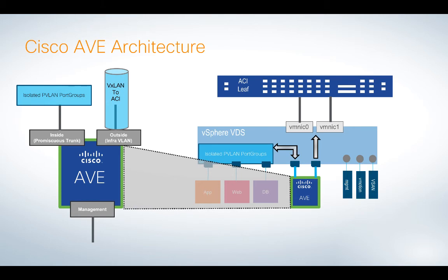If traffic needs to connect outside of the AVE — say you want to talk to the internet or elsewhere in the ACI fabric — we use the outside interface. In my lab, I deploy it using VXLAN encapsulation. There's going to be a VTEP and a VXLAN tunnel that leads to the rest of my ACI fabric. That's beneficial because I don't have to trunk every single VLAN to every ESX host. I only have to trunk one — the infra VLAN of ACI — down this tunnel and everything works.